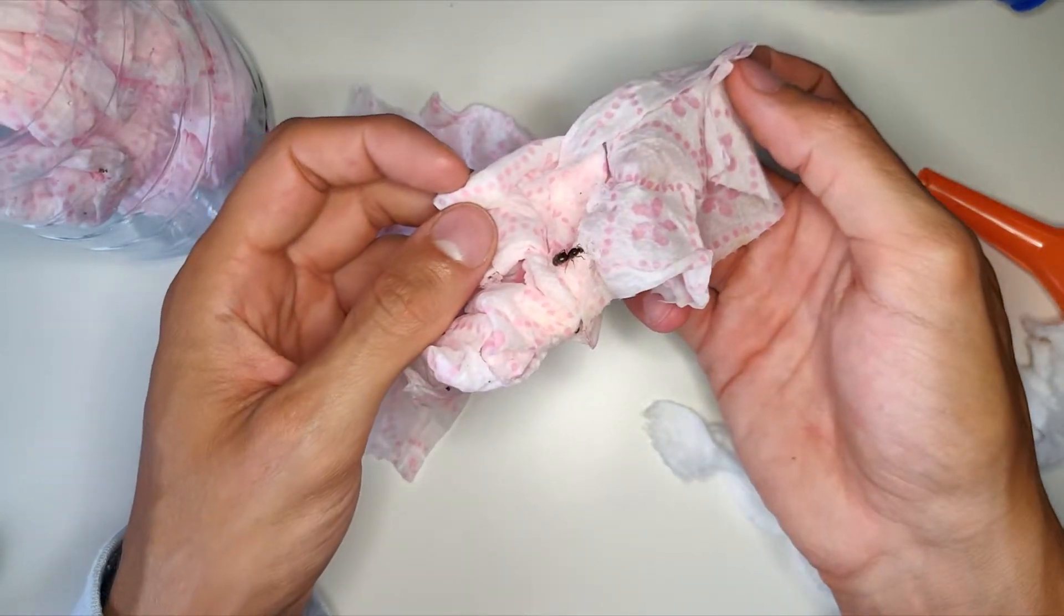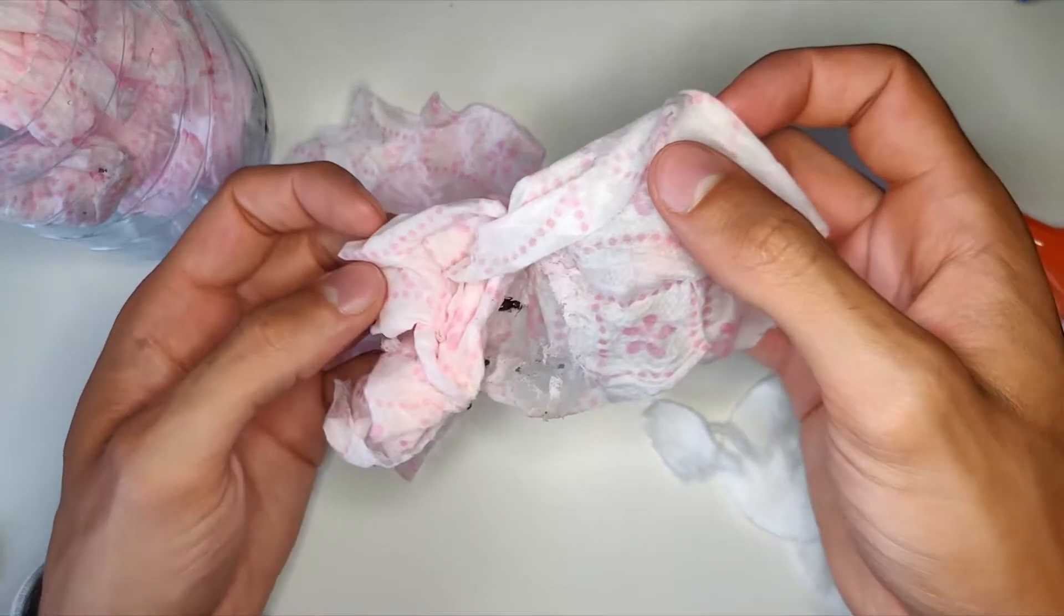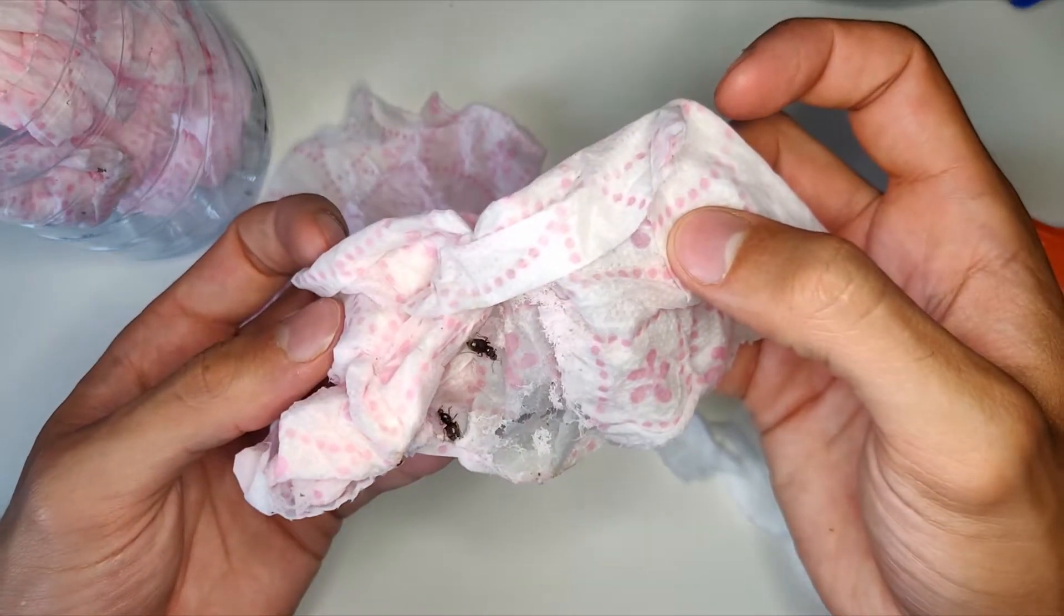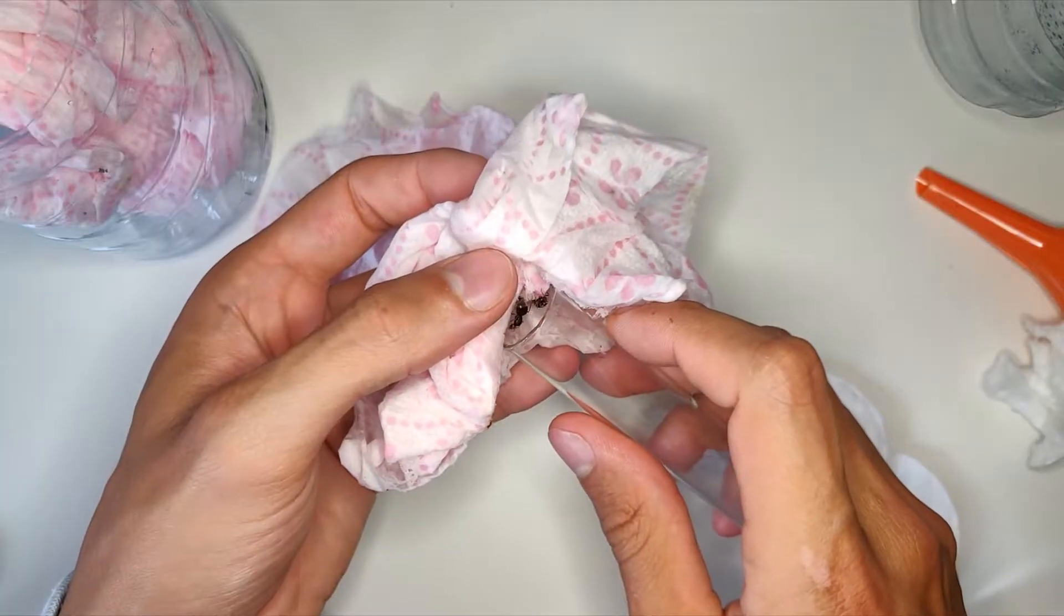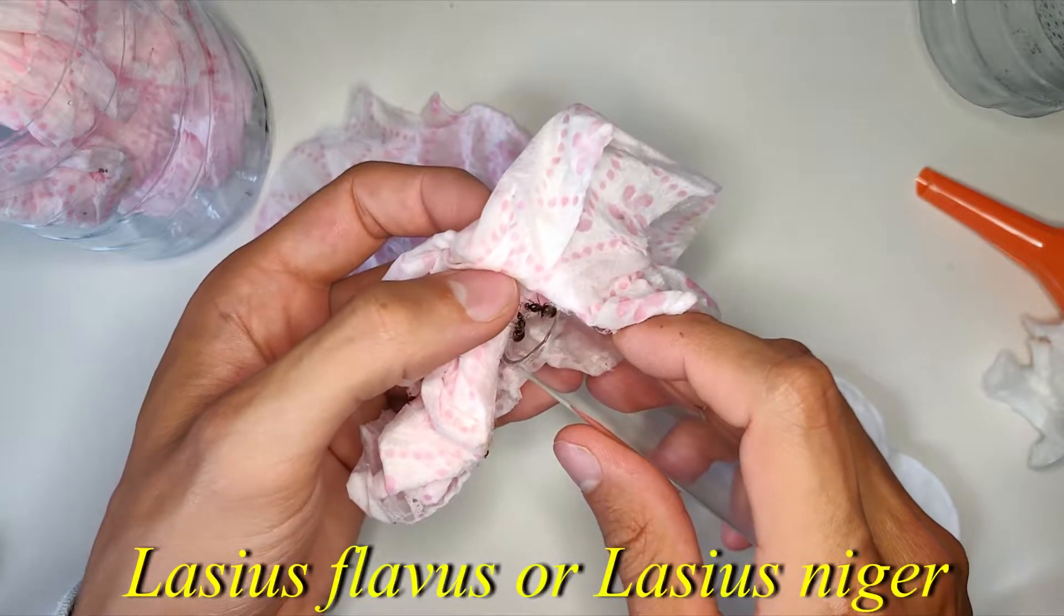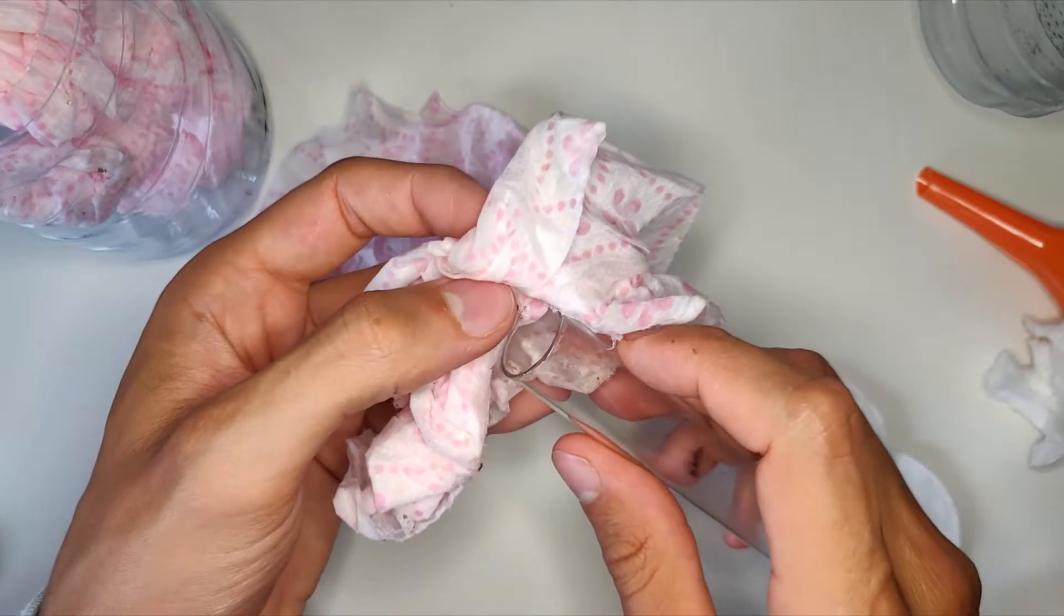Oh there is an ant here. Oh there are multiple ants here, also some eggs. This species is Lasius flavus or Lasius niger, one of the two.